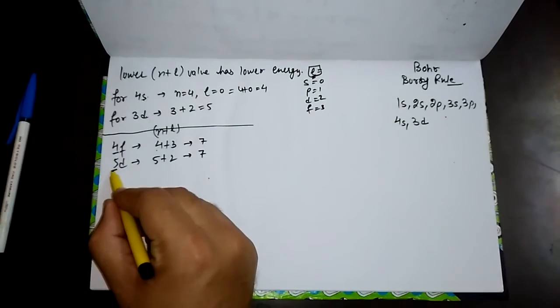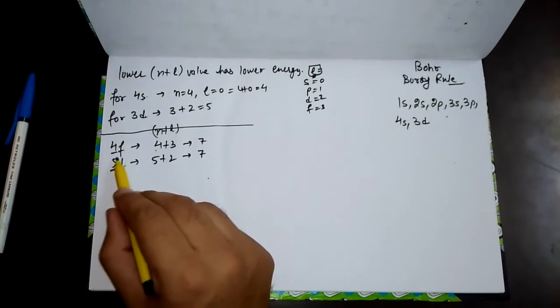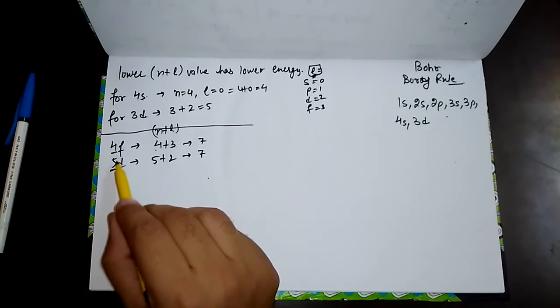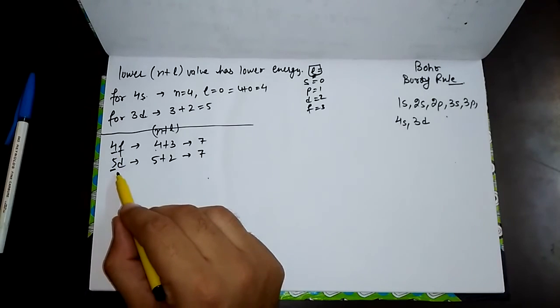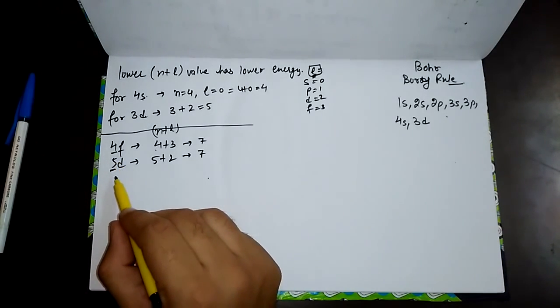Since 4f orbital has a lower value of n than 5d, it has lower energy than the 5d orbital. So we will fill the 4f orbital first instead of 5d. This is all about the Bohr Bari rule.